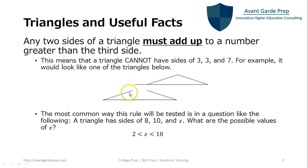When you add up any two sides, they have to be greater than the third side. The most common way this rule is tested on the SAT is a question as follows: A triangle has sides of 8, 10, and x. What are the possible values of x?